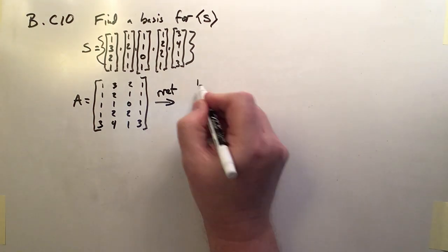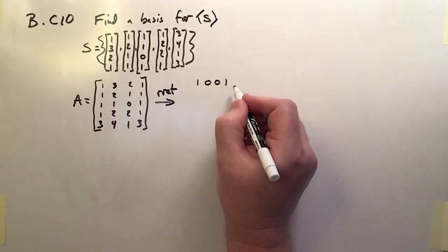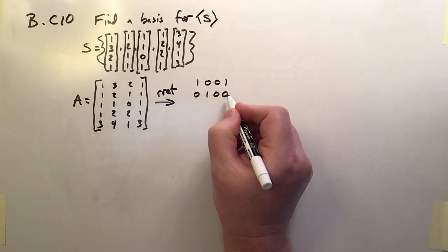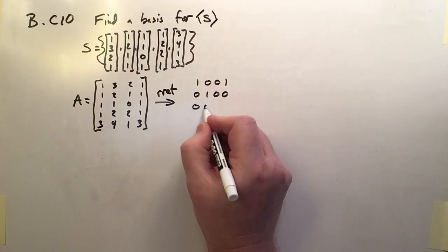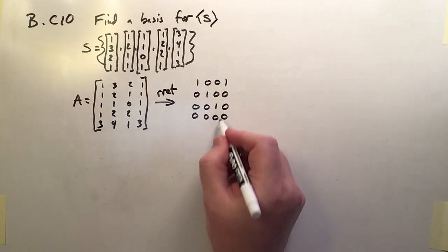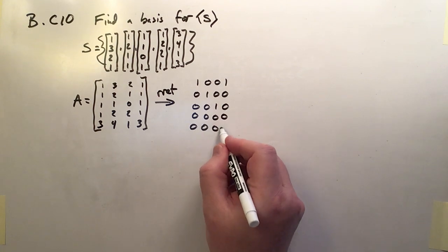So when I RF this, this is what I end up with. So it's 1, 0, 0, 1. The next row is 0, 1, 0, 0. The third one is 0, 0, 1, 0. And the last row, last two rows are all zeros. So two rows of zeros only.